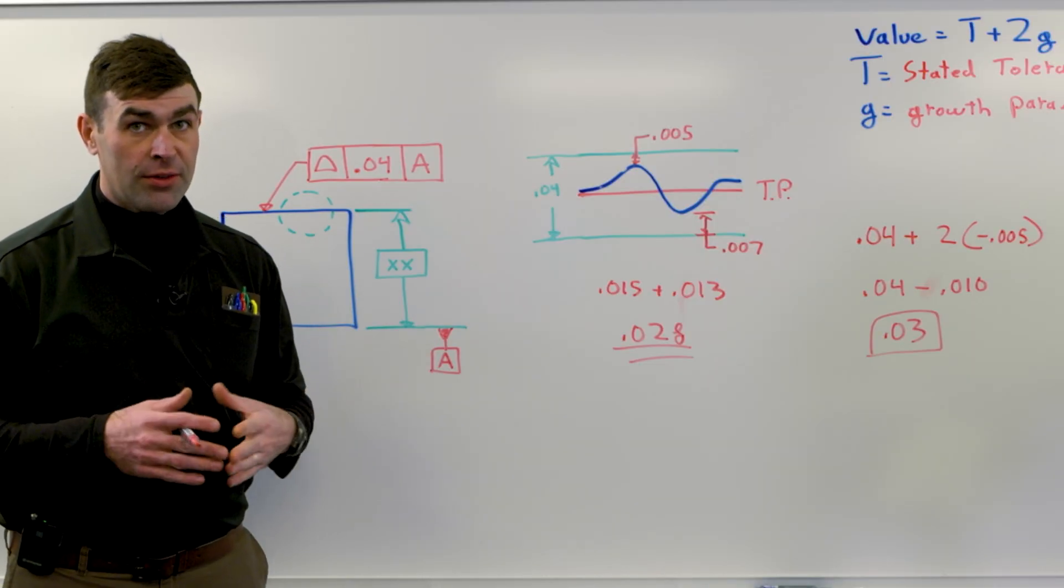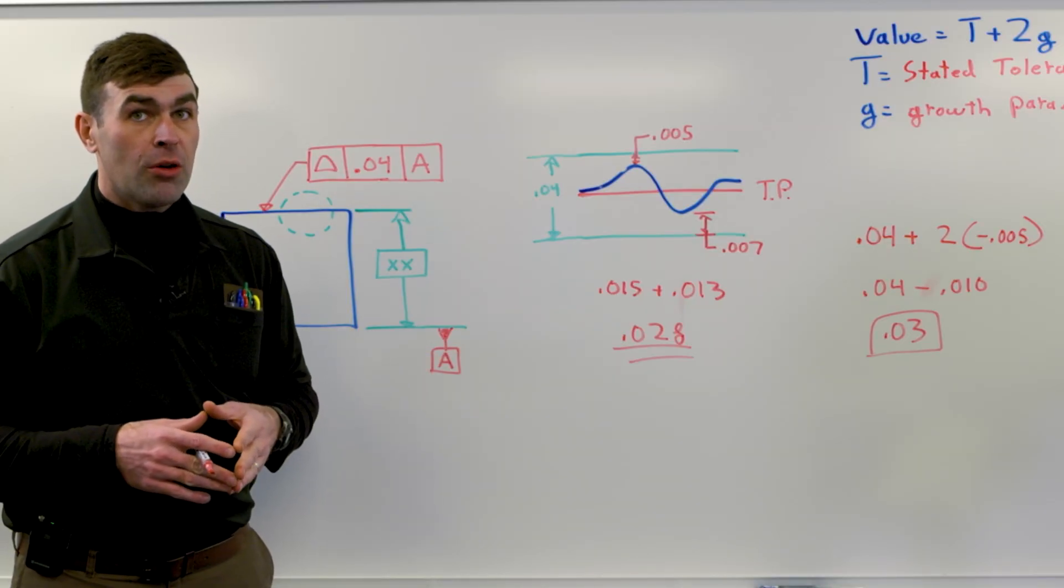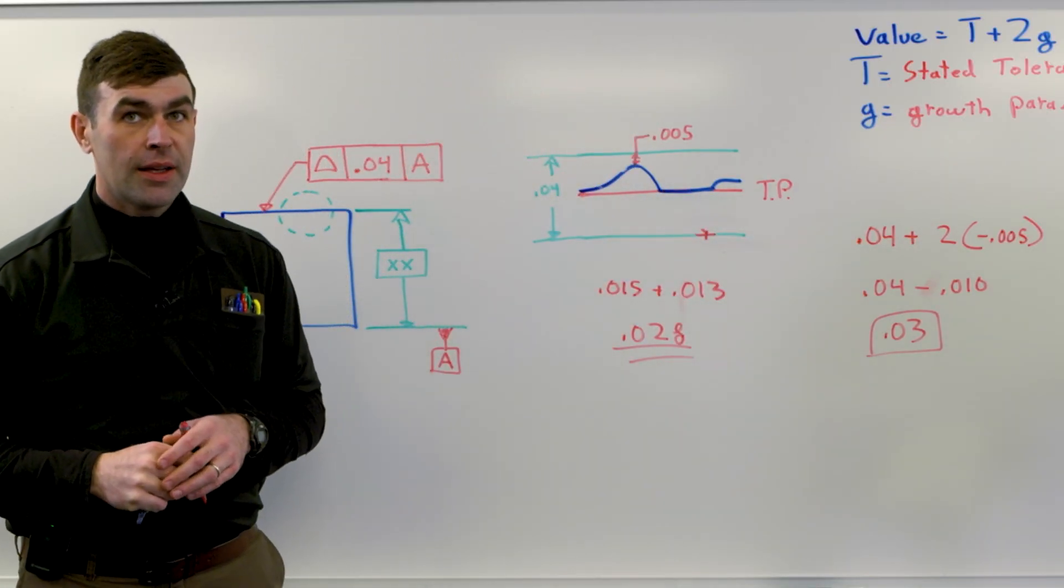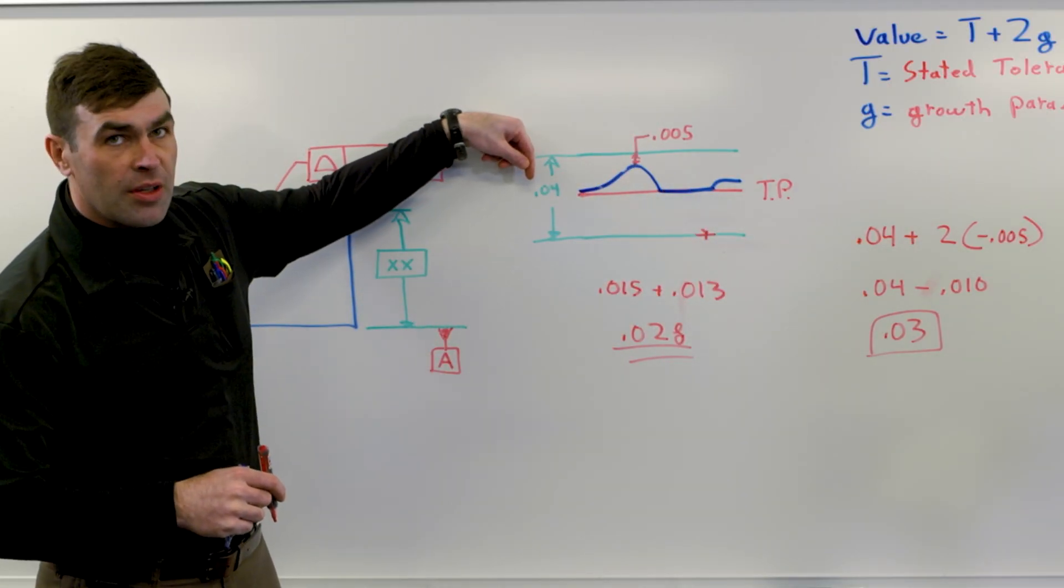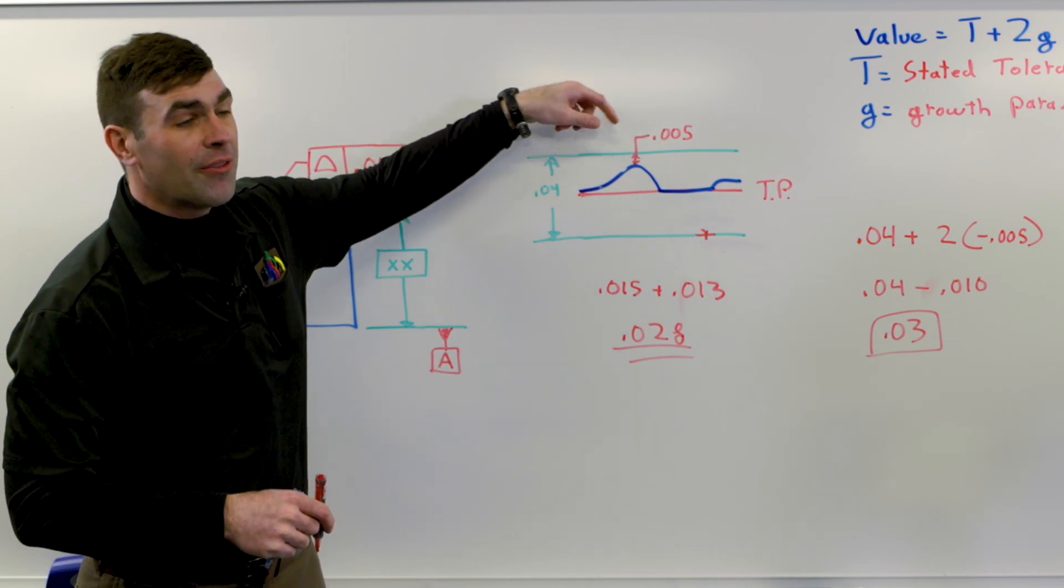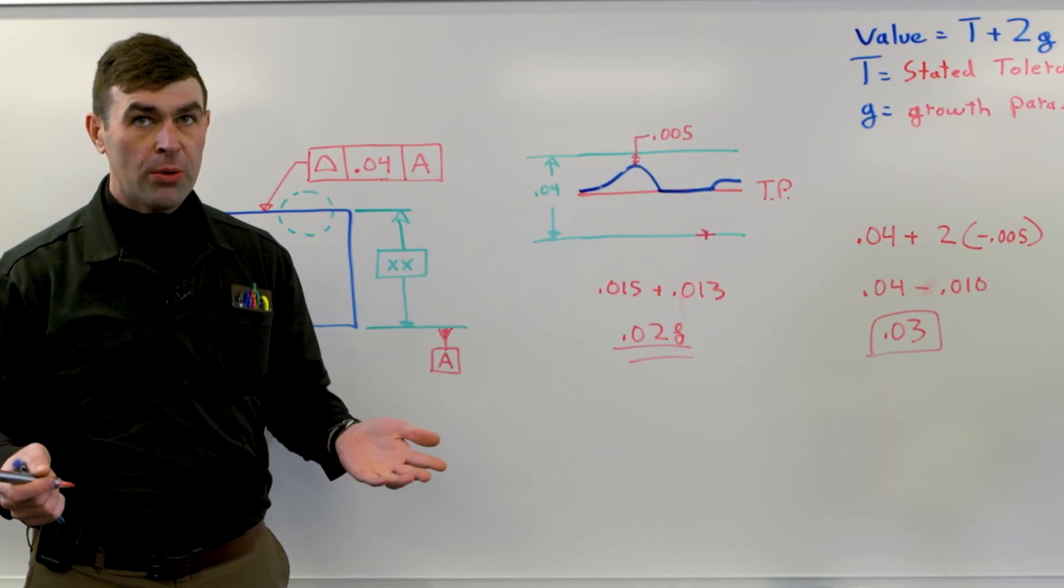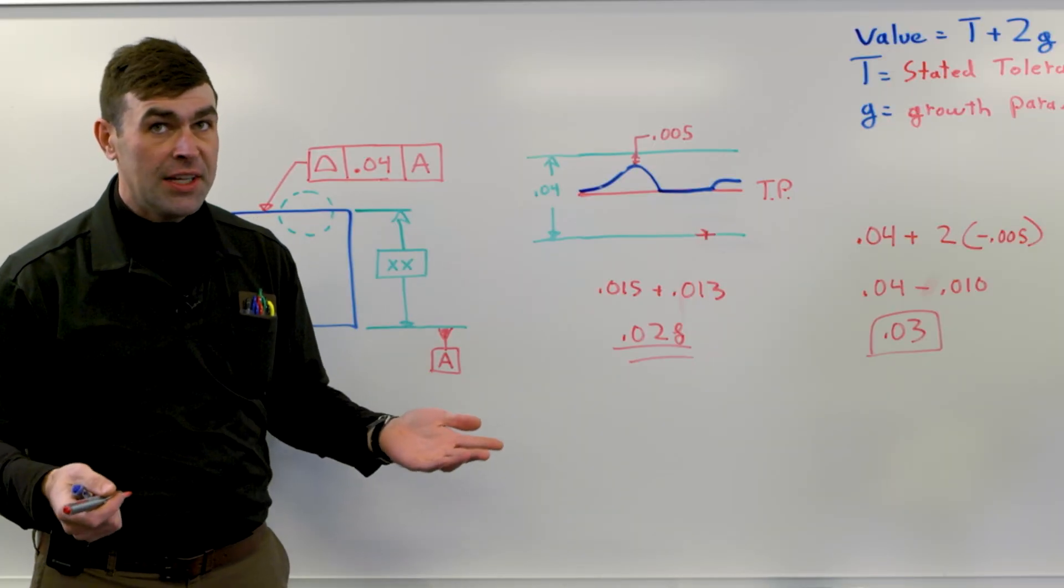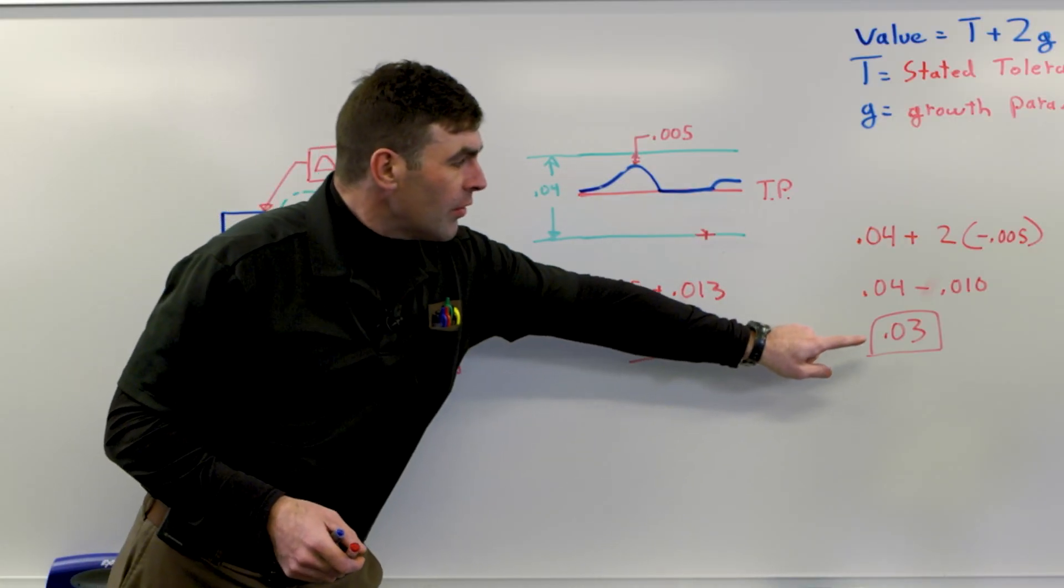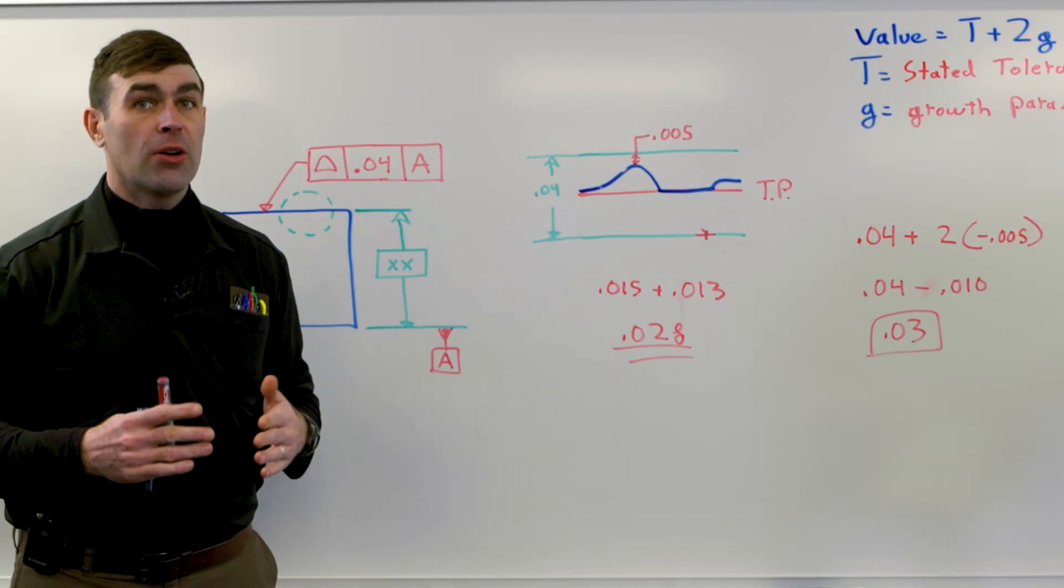So our total indicator reading is different from what Y14.45 wants us to report. This comes up when you put things on a coordinate measuring machine. Sometimes it'll spit out this number. You might go measure it on a surface plate. You might have a part like this, right? Where you measure it on a surface plate, right? Fifteen, you double it, or you measure fifteen thousandths, and you're like, hey, it's only fifteen thousandths away from where it's supposed to be. Why isn't it fifteen?